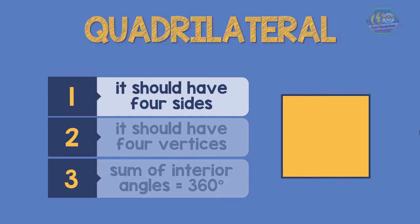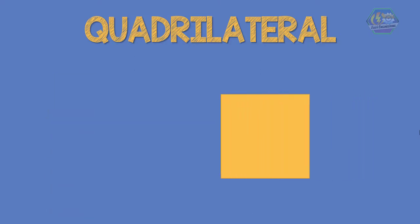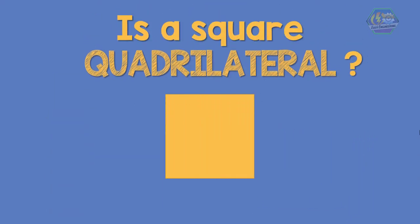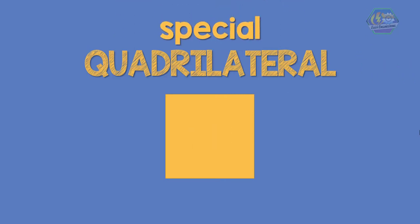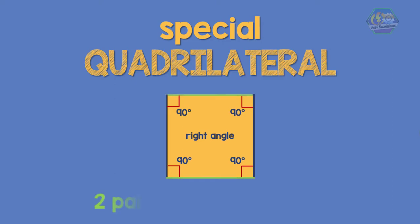A square has four sides, it also has four vertices, and the sum of the interior angles of the square is equal to 360 degrees. So to answer the question: yes, a square is definitely a quadrilateral. In fact, a square is a special kind of quadrilateral — it is special because all four sides have the same length and all four angles are exactly the same size. Each angle of the square is always equal to 90 degrees, meaning it is a right angle.